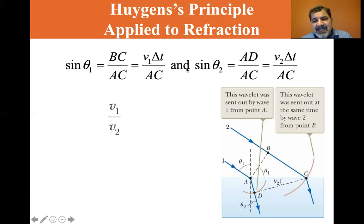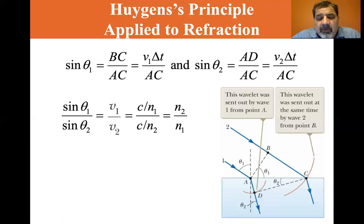So if we divide sine theta one by sine theta two, you'll see the AC will cancel and the delta T's will cancel, and we'll get V1 over V2. So sine theta one divided by sine theta two gives you V1 over V2, and that equals C over N1 divided by C over N2, which equals N2 divided by N1. So the ratio of sine theta one to sine theta two is equal to N2 to N1.